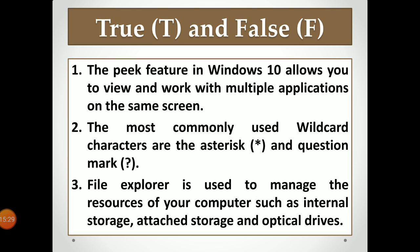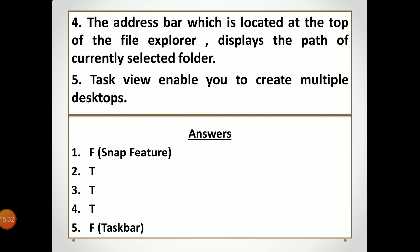So it is True — in File Explorer all of this is shown to us. Fourth statement: the address bar, which is located at the top of the File Explorer, displays the path of the currently selected folder. When we open File Explorer and select a folder, the address bar at the top shows the full path of that folder — for example if it's saved in D drive, it shows the complete D drive path. So this is also True.